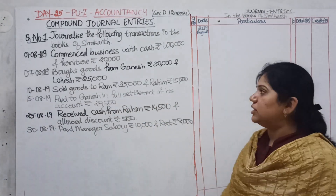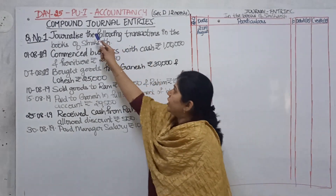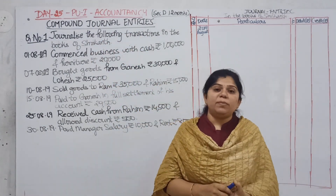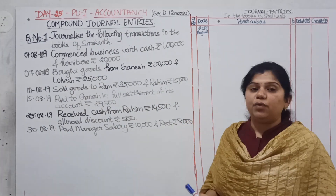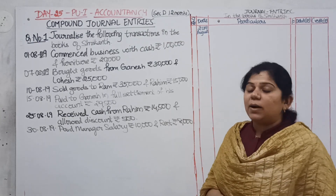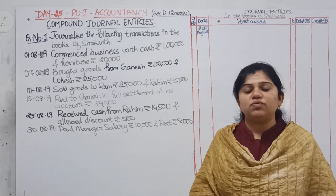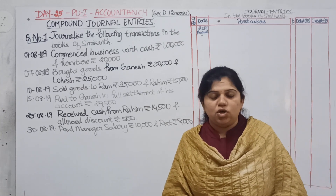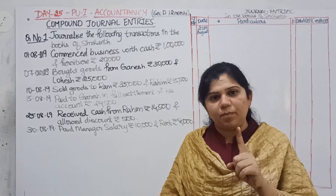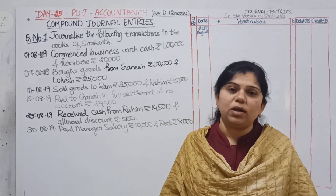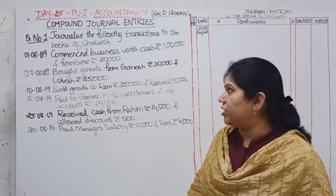Hello dear students, welcome to the accountancy class. Today we are going to learn how to create compound journal entries. These are entries which you are doing collectively — in one day, you are making some transactions which are of similar nature. So instead of making separate journal entries for each transaction, you will make only one entry. The combined entries are called a compound journal entry.